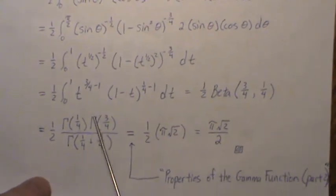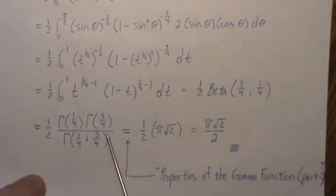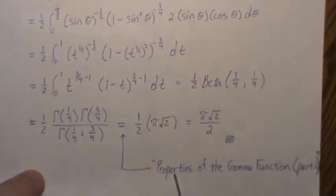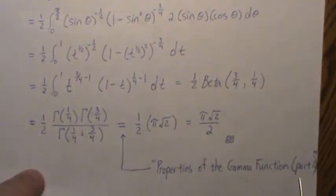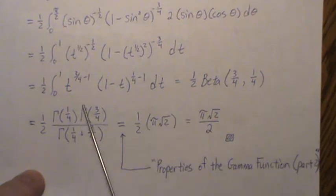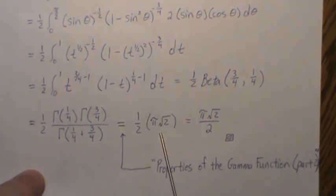And then expanding that, we get this. Now this is 1/4 plus 3/4 is 1, gamma of 1 is 1. Now the 1/2 comes over, but the top part, since these add to 1, there's a nice little formula that we derive in properties of the gamma function part 2, and we show that that is π times the square root of 2, which then this is the answer.